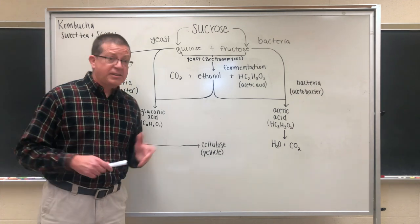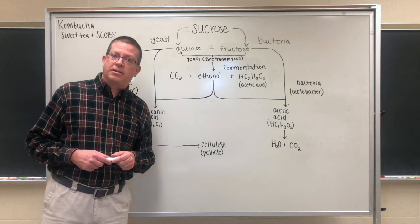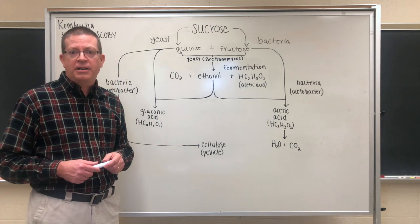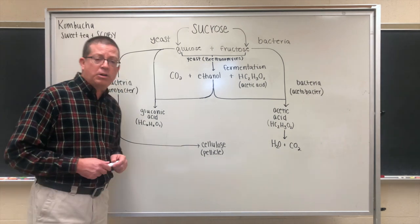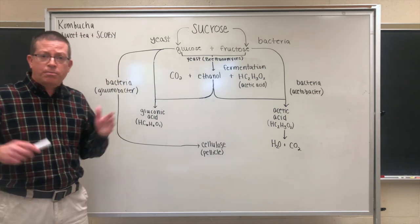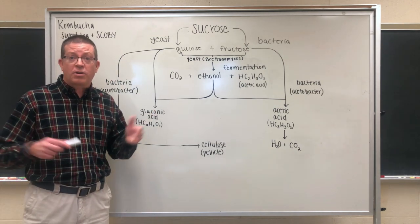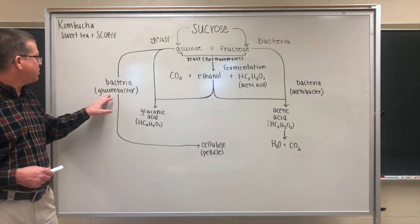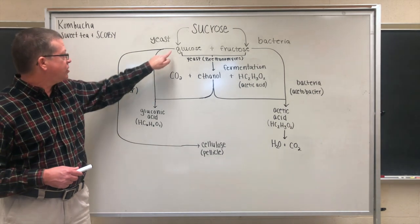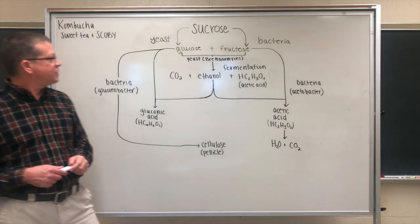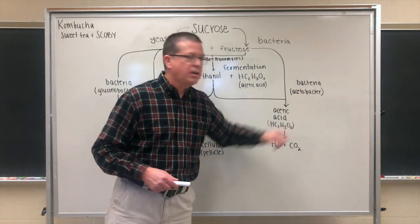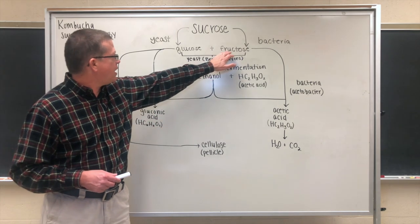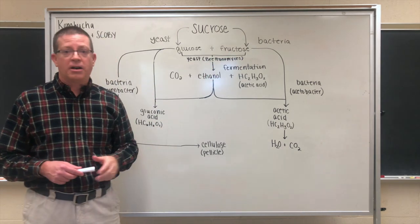Now let's talk about the role of the bacteria. In the SCOBY we typically have two or more types of bacteria. The primary types both fall under the acetobacter, or acetic acid bacteria, family. We have gluconobacter, which handles the reaction of glucose, and we also have acetobacter, which handles the production of acetic acid through the utilization of fructose.